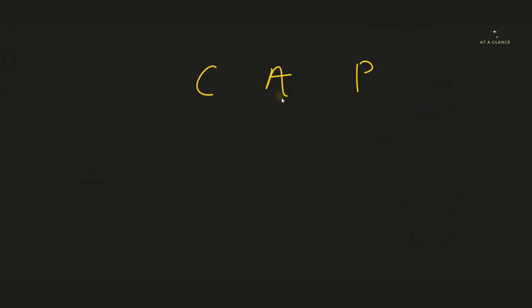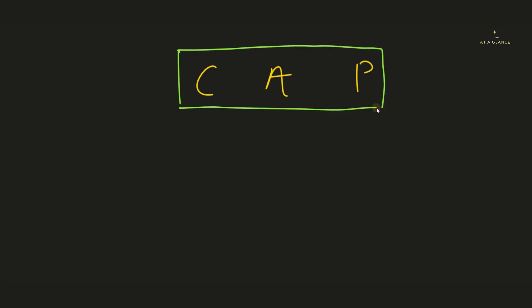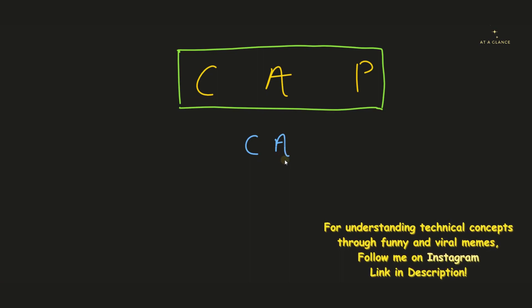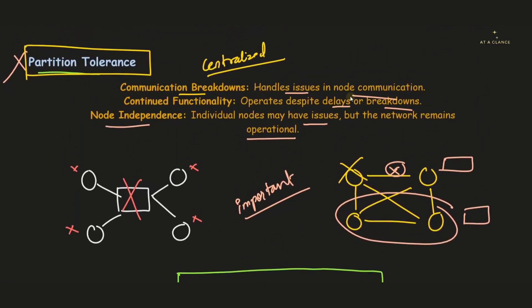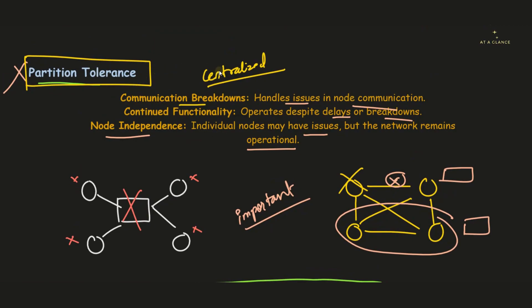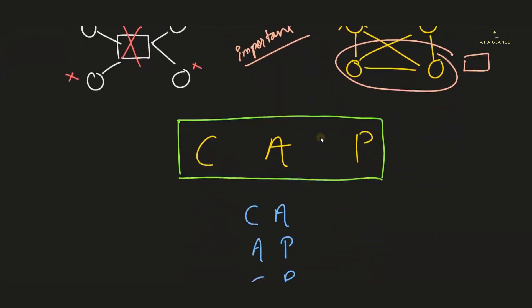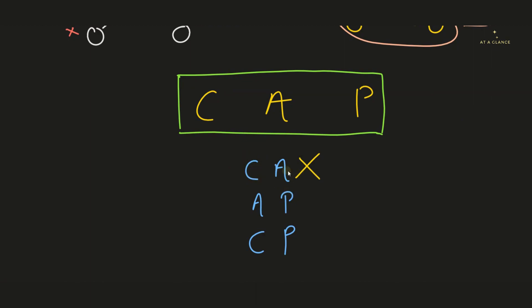According to CAP theorem, any distributed system cannot follow all three properties — Consistency, Availability, and Partition Tolerance — at the same time. There has to be a trade-off between any two of them. Since avoiding Partition Tolerance would make our system centralized, that option is not valid. Therefore, Consistency and Availability cannot both be maintained simultaneously in a distributed system.